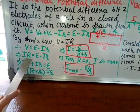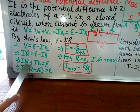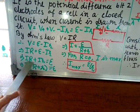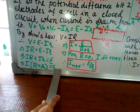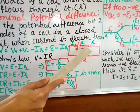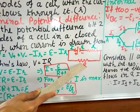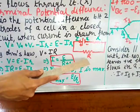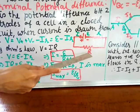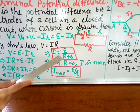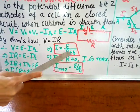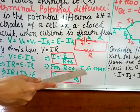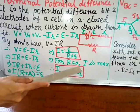Substituting V = iR into V = E − ir gives iR = E − ir, so iR + ir = E, giving i(R + r) = E, and therefore i = E / (R + r). Here R is the external resistance connected in the circuit and r is the internal resistance of the cell. Maximum current occurs when external resistance R = 0, giving maximum current i = E / r.